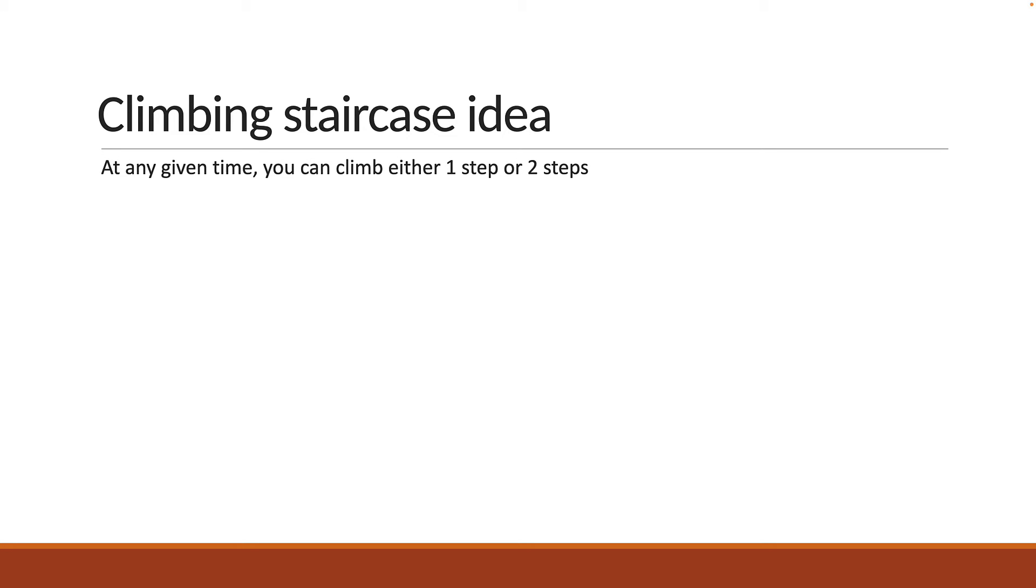At any given time, you can either climb one step or two steps. Which means, if you have to climb to step n, we can only climb from step n-1 or n-2. There is no other way. So what we have to do is calculate the ways we can climb to n-1 and n-2 steps and add the two. That will give you the ways to climb to the nth step.